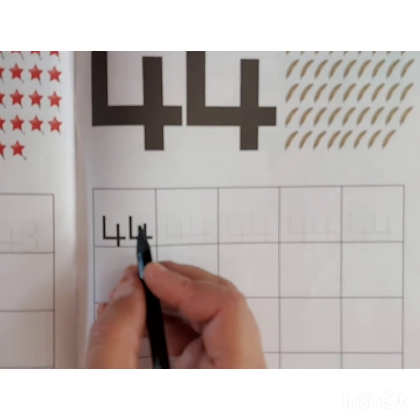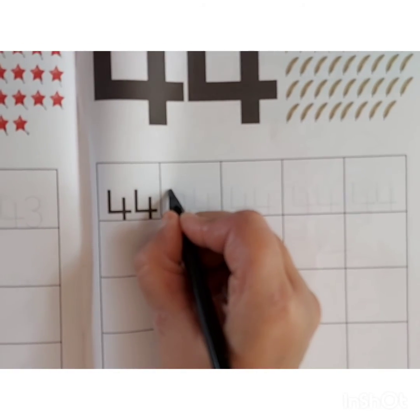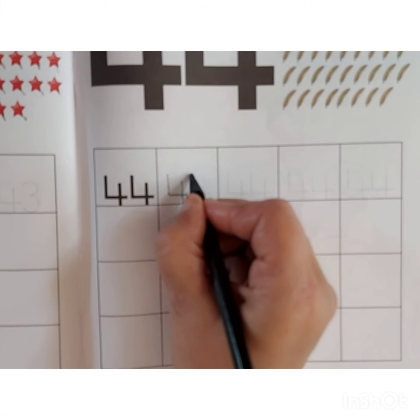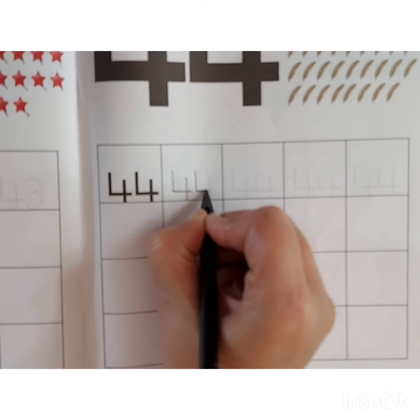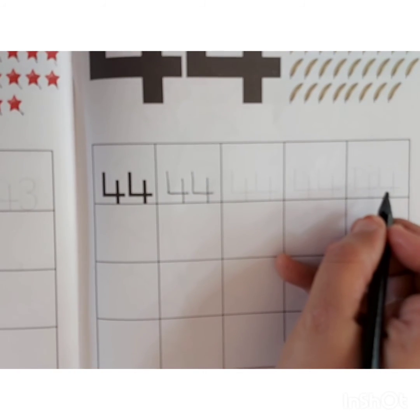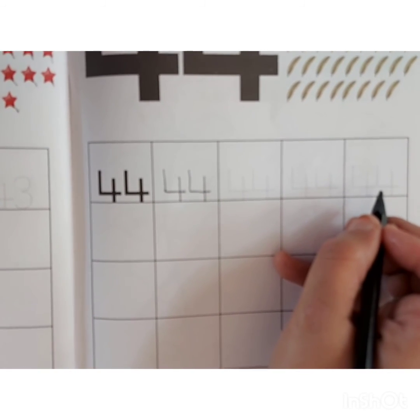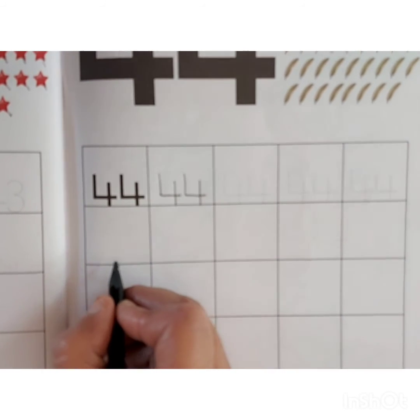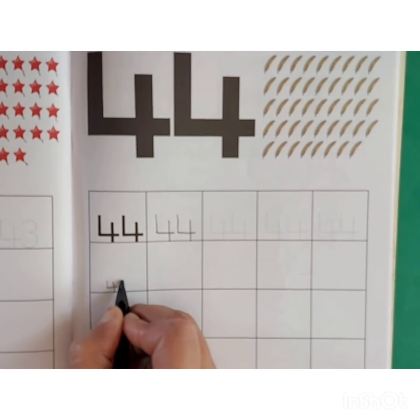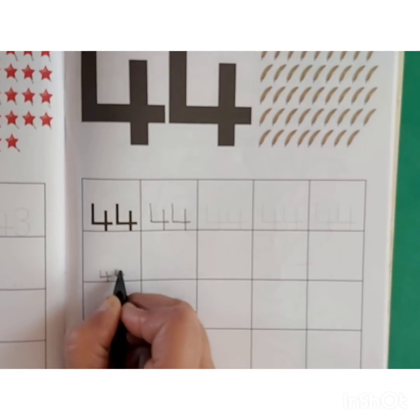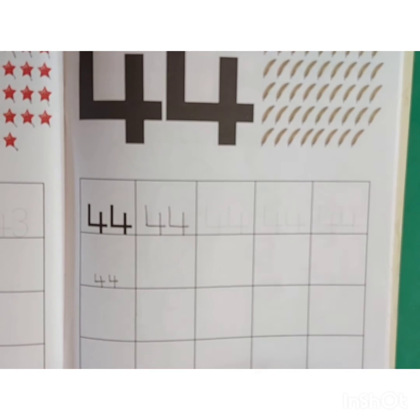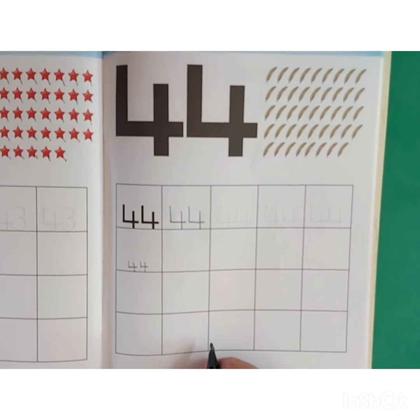Now we will trace number 44. First we will trace number 4. Like this way you have to complete this line. Now we will trace number 44 in this box. First we will trace number 4. Again number 4. Touch the down line. 44. Like this way you have to complete all these boxes. Okay kids?